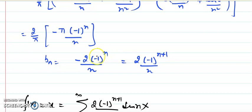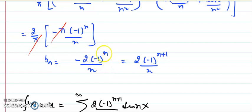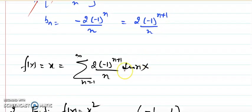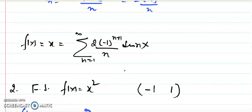Plugging in the limits: the upper limit gives -π cos(nπ)/n and sin(nπ) = 0; the lower limit gives 0·cos(0) = 0 and sin(0) = 0. So only one term survives: -π cos(nπ)/n. Since cos(nπ) = (-1)ⁿ, we get bₙ = (2/π)·(-π·(-1)ⁿ/n) = -2(-1)ⁿ/n, which can be written as 2(-1)^(n+1)/n.